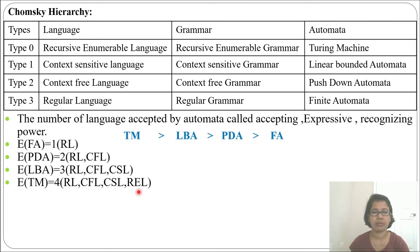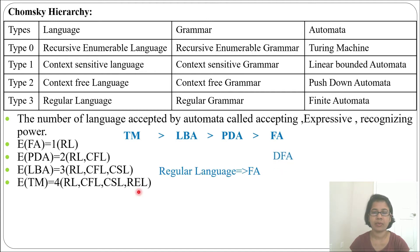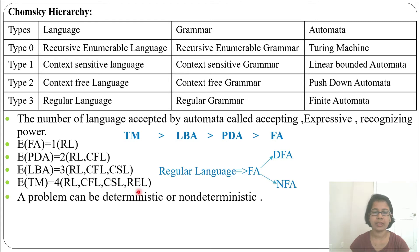Expressive power of FA is 1 because FA only accepts regular language. Expressive power of PDA is 2 — it accepts regular and context-free language. LBA has expressive power 3 — it accepts regular, context-free, and context-sensitive language. Turing machine has expressive power 4 — it accepts regular, context-free, context-sensitive, and recursively enumerable language. TM is a superset of LBA, LBA is a superset of PDA, and PDA is a superset of FA. Regular language is accepted by FA, which is of two types: DFA (Deterministic Finite Automata) and NFA (Non-Deterministic Finite Automata).